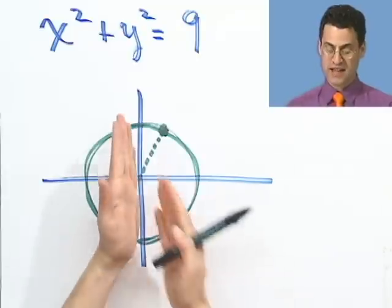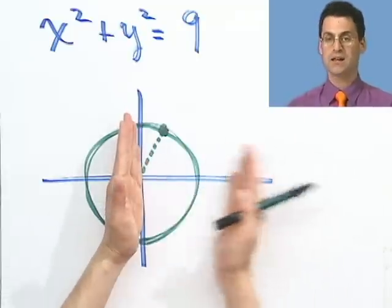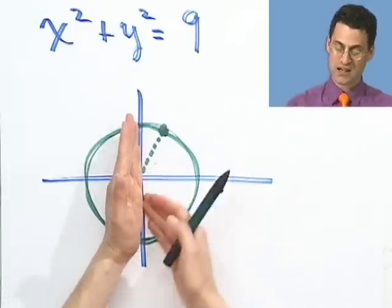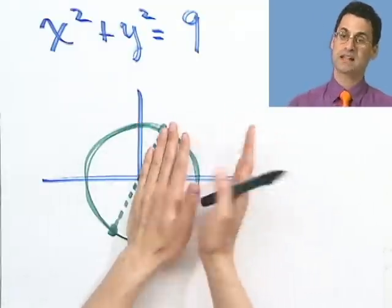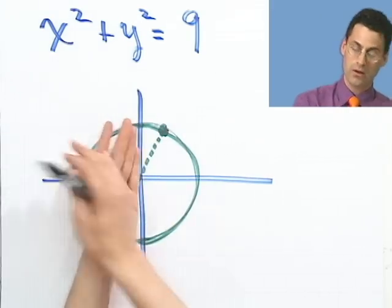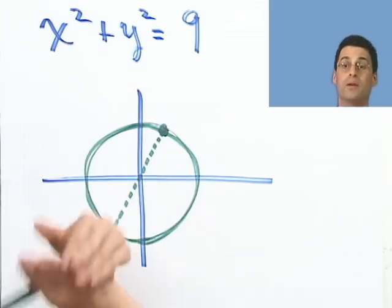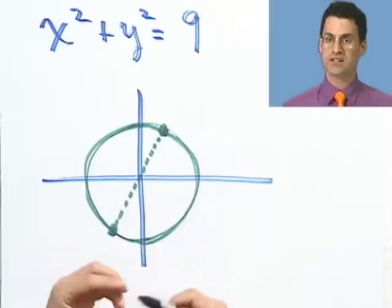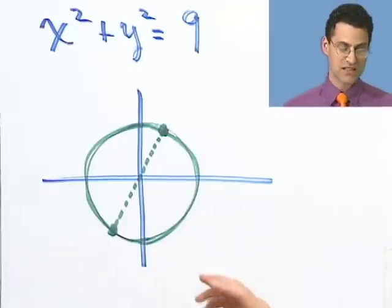The bottom line is: if you can detect some symmetry, then by graphing just one side you automatically get the other side — either by flipping once (even/y-axis symmetry) or by flipping and then flipping again (odd/origin symmetry). That gives you a sense of symmetry in a picture and a better chance to figure out what the graph may look like.